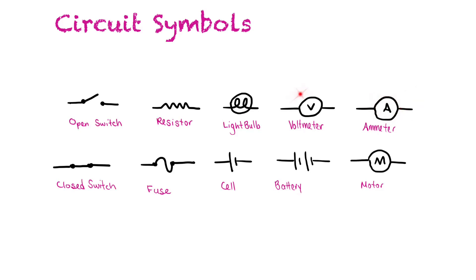And ammeters — represented by a circle with an A — measure the speed of electrons going through a circuit. We'll learn more about these two things when we start building our circuits and learning about something known as Ohm's law. Over here we have a closed switch — you can see it looks like the open switch except the lever is down, so there is now a complete circuit and electrons can flow through.